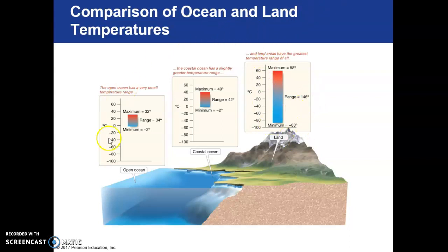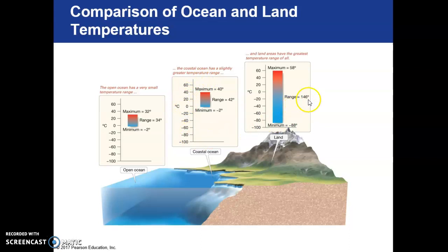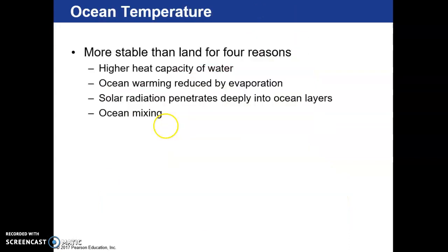Comparing ocean and land: on land we experience lows of negative 88 degrees Celsius and highs of 58 degrees Celsius, giving a range of 146 degrees. In coastal areas, the range drops to about 42 degrees because heat exchange is easier there. Out in the open ocean, we only experience a range of 34 degrees. That may seem like a lot to us, but it's really not much to marine creatures.